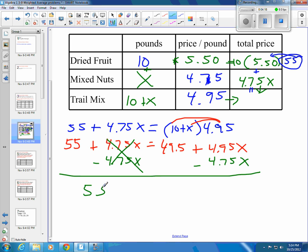I've got 55 left on one side. And then I've got my 49.5. And 4.95 minus 4.75 would be a positive 0.2X.